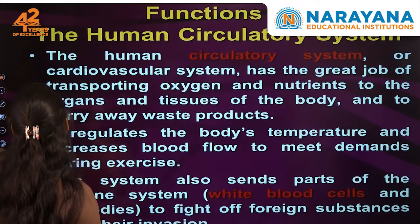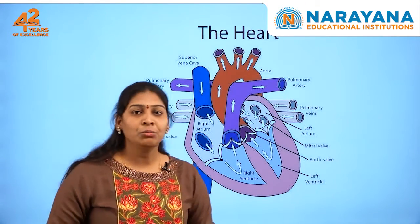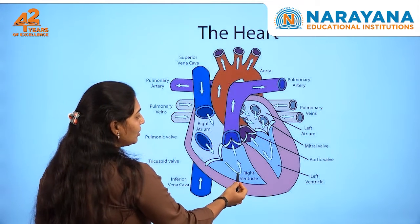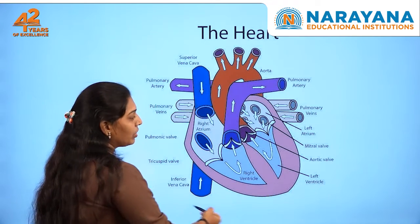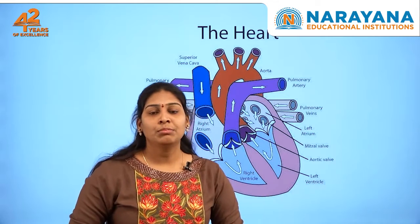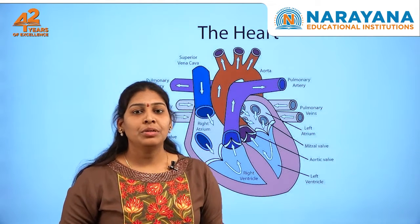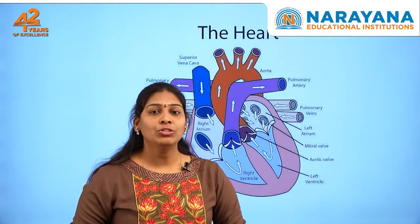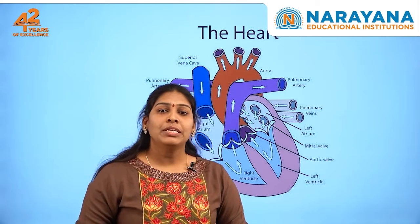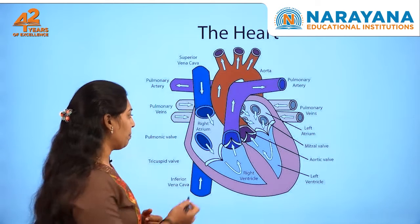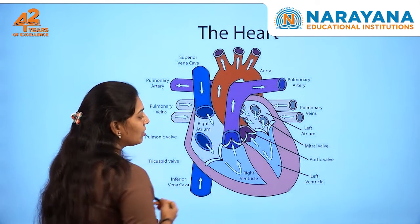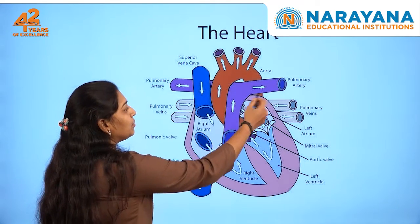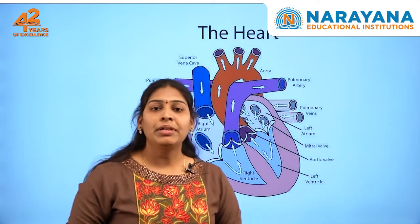Now let's see how it transports nutrients. The heart in human beings consists of two upper chambers and two lower chambers. The heart is located in the thoracic cavity, between the two lungs, and is protected by the rib cage and by membranes surrounding it, known as pericardial membranes, filled with pericardial fluid which protects the heart. The lower chambers are called ventricles whereas the upper chambers are called auricles, and they are connected with blood vessels — arteries, veins, and blood capillaries.